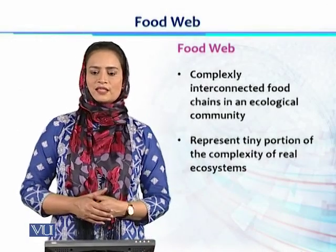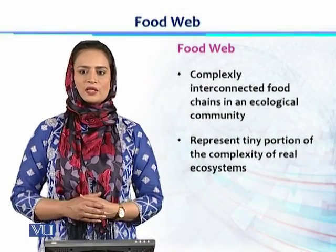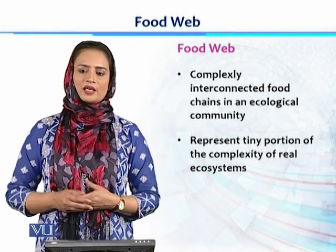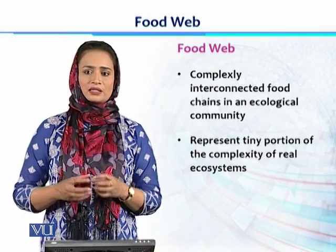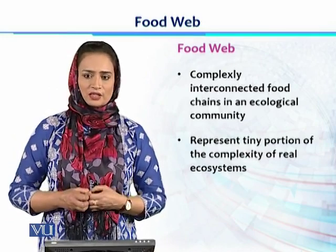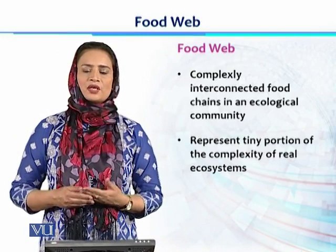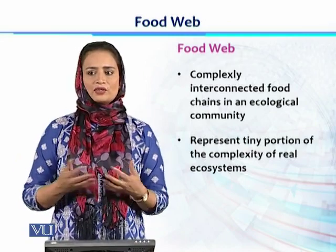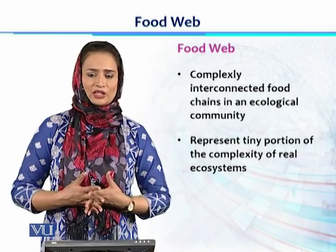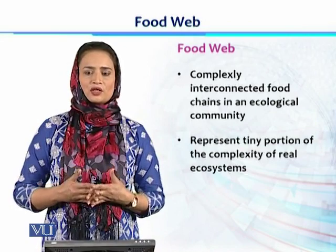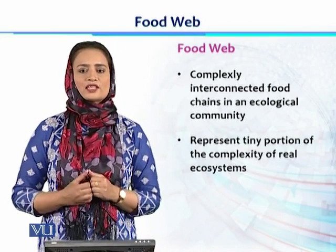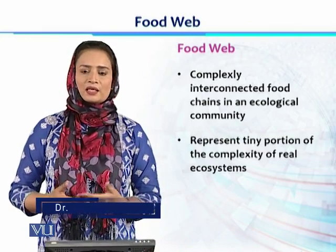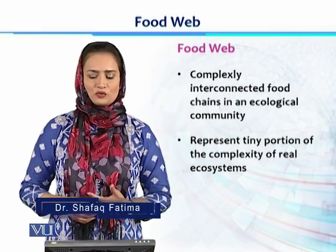Previously, we studied about food chain, which is a linear sequence, a linear arrangement of different trophic levels. We talked about how a food chain is a very dynamic entity in an ecosystem. But in any ecosystem, there are not only one, two, or three food chains. Actually, there are several food chains which are interconnected with each other, making a complex structure called a food web. Food web is more dynamic and more complex in an ecosystem as compared to food chains.